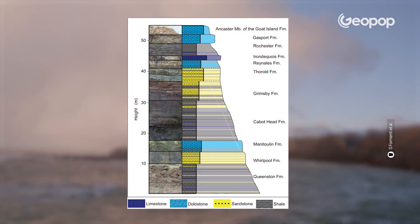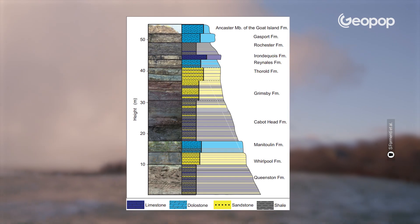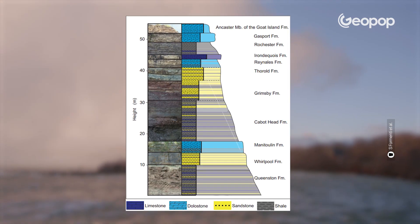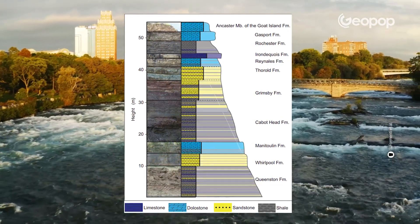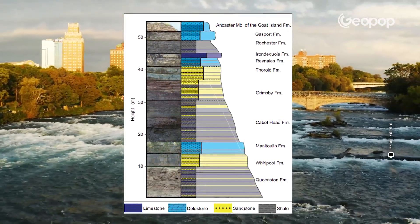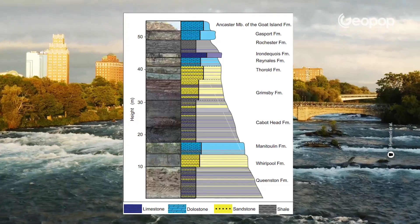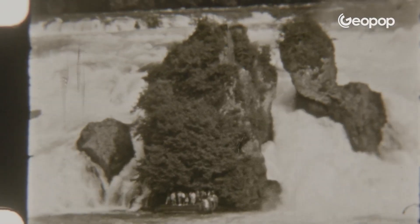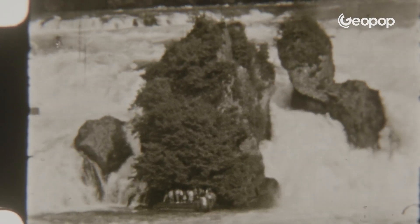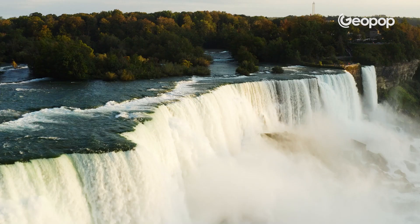These sedimentary rocks, formed from the compaction of clay, mud, and organic matter, are weaker and tend to erode first, which leads them to collapse. And these collapses, in turn, also cause the overlying sections of dolomite to fall as well. By doing so, the escarpment was formed — this huge step that we can still see today.